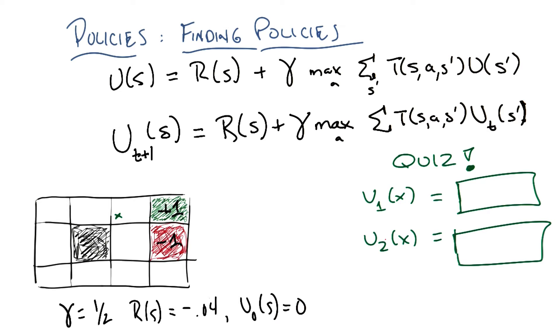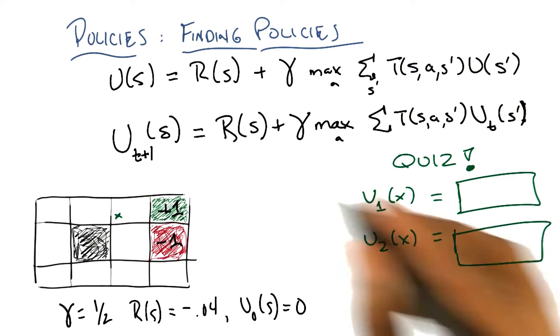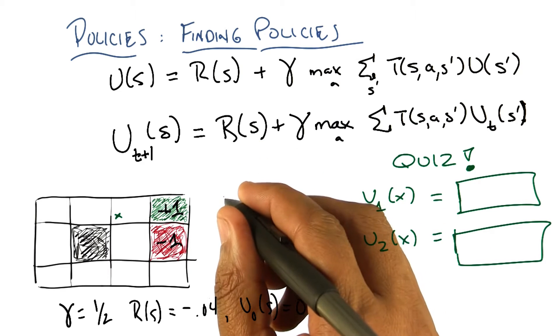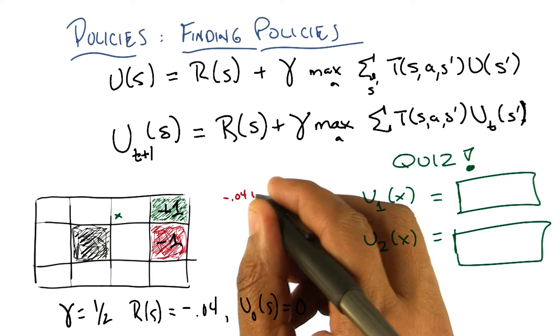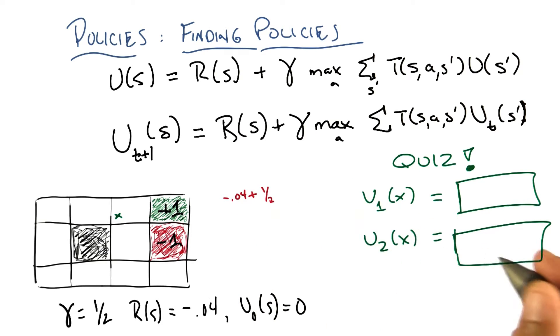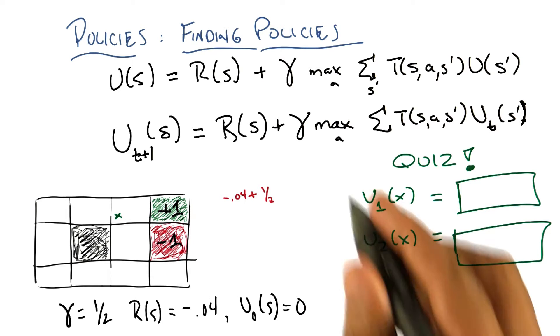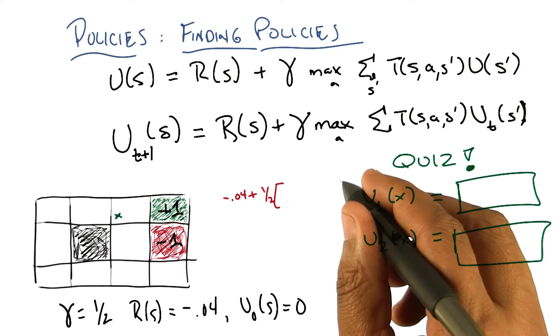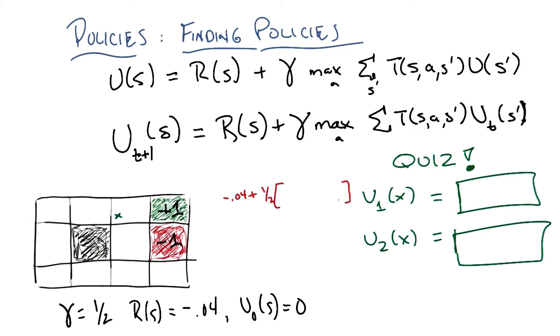All right, so at that state x, we have to consider, according to the equation, we're going to do u sub 1 at x. And that's going to be the reward at x, which is minus 0.04. Plus gamma, which is a half. Feel free to write these things down. Okay, so it's going to be minus 0.04 plus 1 half times. All right, so now we need to do four different actions. I would make like a bracy thing at this point. Not a bracket, but a brace. Because you're going to notice immediately that it's obvious what the right action is.